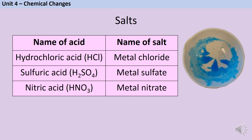The surname comes from the acid. When hydrochloric acid reacts with a metal or a base, it makes metal chlorides, like tin chloride. When sulfuric acid reacts, it makes sulfates, like this blue copper sulfate here. And when nitric acid reacts, it makes nitrates, like zinc nitrate. So your first step in any exam question about required practical one may be to identify which acid you would need to use to make a particular salt.